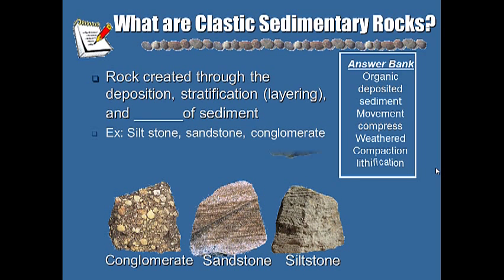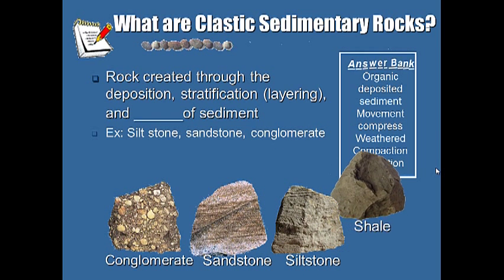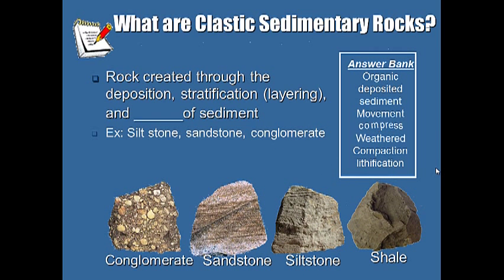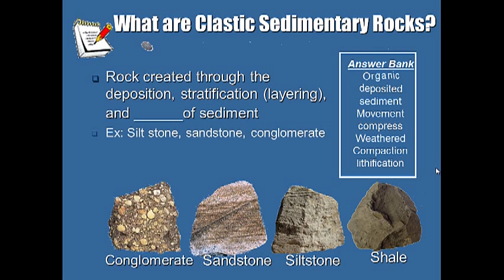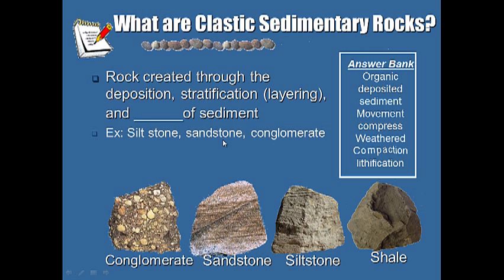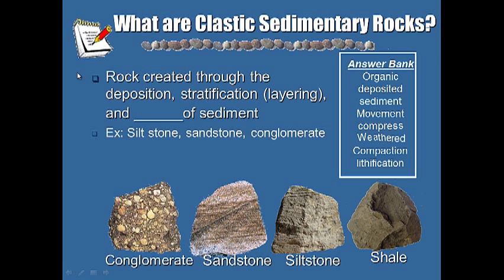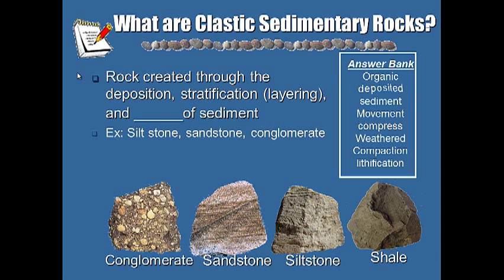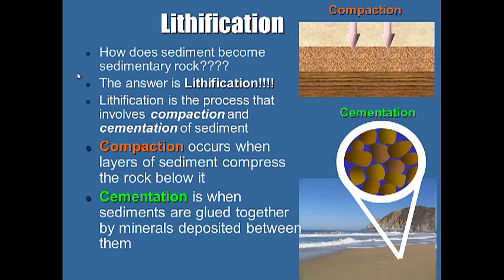For your notes: What are clastic sedimentary rocks? Write the question on the left-hand side and the answer on the right-hand side. Use your answer bank to determine which word best completes the sentence. Make sure you're writing your examples down — sandstone, conglomerate, siltstone. Now, how does sediment become sedimentary rock? In other words, how does sand become sandstone? Through lithification.